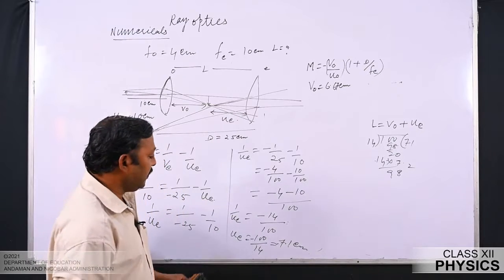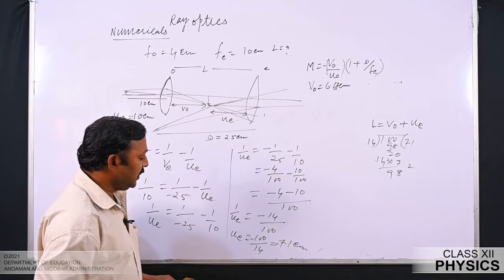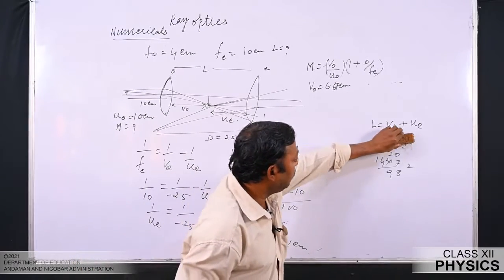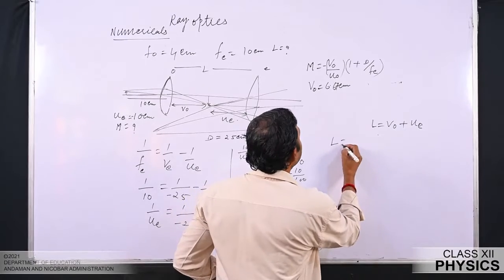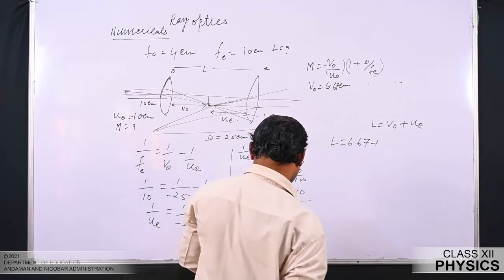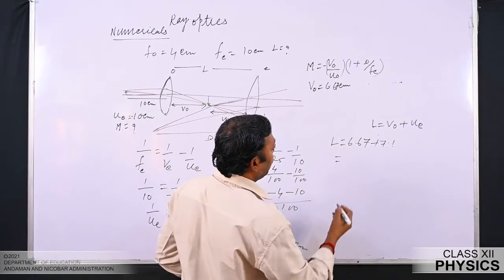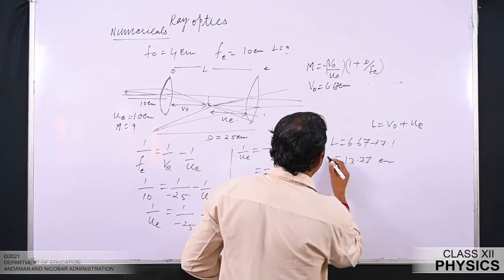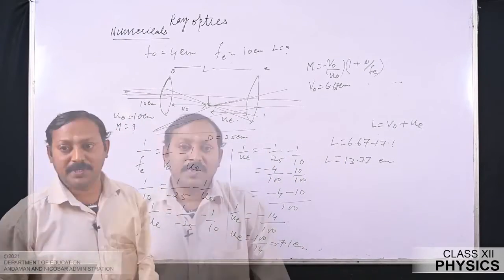Now we have vo ≈ 6.67 centimeter and ue ≈ 7.1 centimeter. The tube length L = 6.67 + 7.1 ≈ 13.77 centimeter. So the tube length comes out to be approximately 13.77 centimeter.